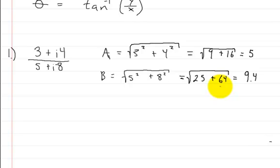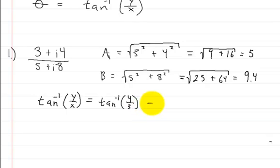So now we have the absolute value or the modulus, and now we need to get the angle. To get the angle, we're going to use the inverse tangent of y over x, or the imaginary value over the real value. So the first one is 4 over 3, and for that you're going to get about 53.13 degrees.